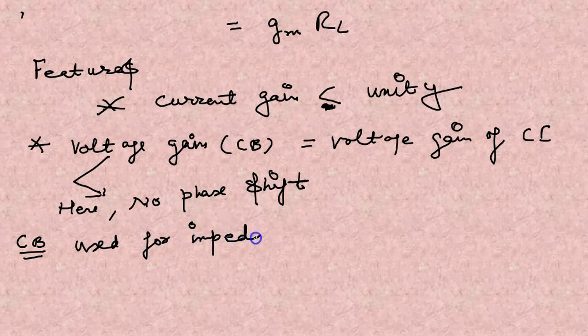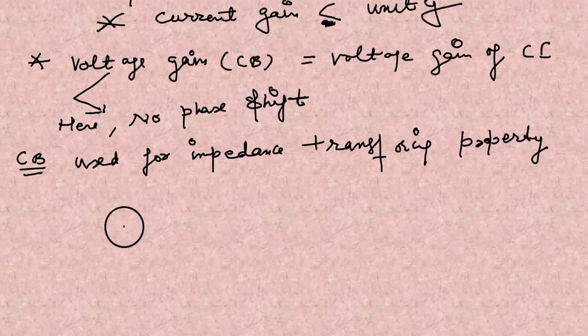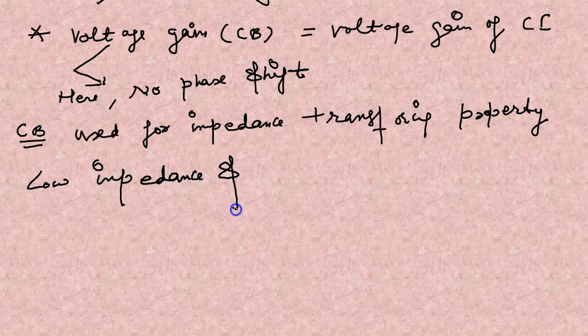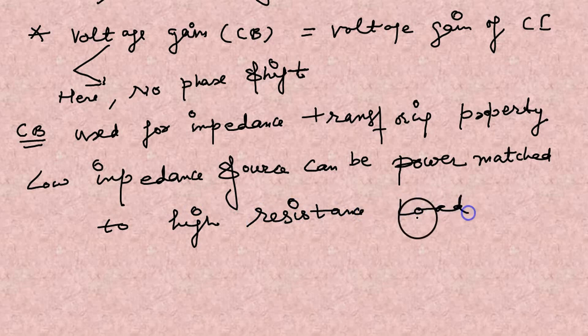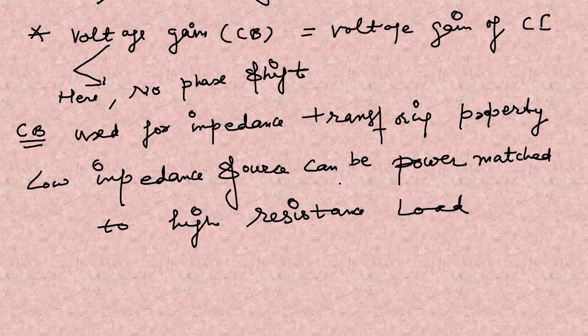Now the common base arrangement is used for impedance transfer, impedance transferring property. Low impedance source can be power matched to the high resistance load. This is the property of the common base.